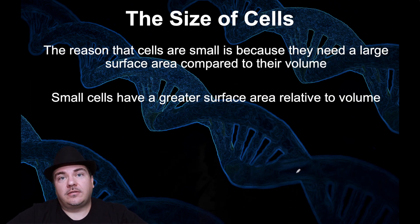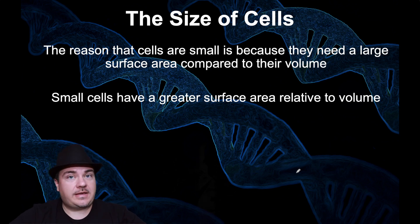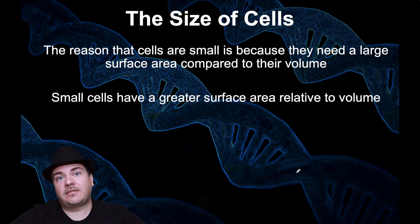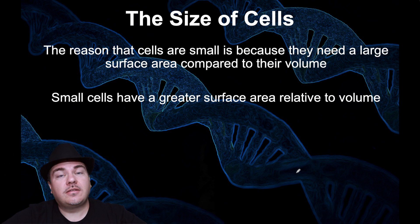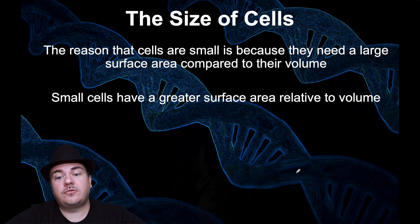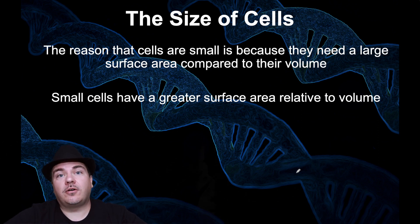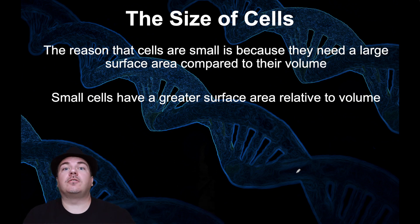One of the things about cells is they're very small, and it turns out they have to be small — they cannot be big. If a cell gets too big, the cell dies. The reason cells are small is because they need a large surface area compared to their volume.